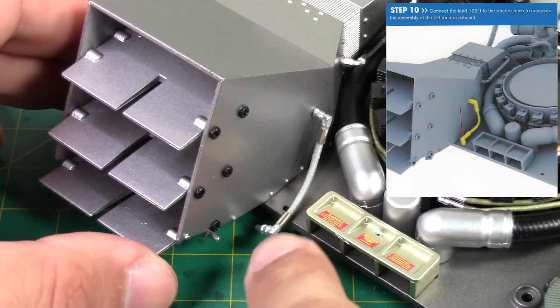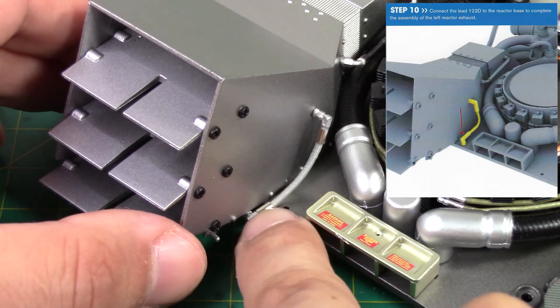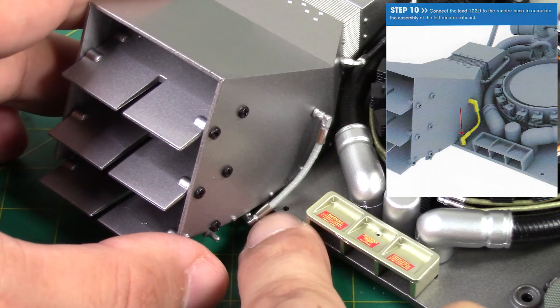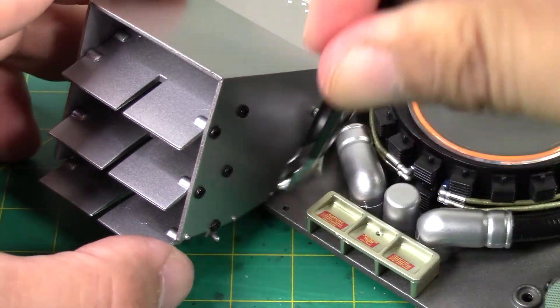And lastly we're going to connect the other end of our cable number 122D and that's going to go right into the last hole right there in the back plate. I think I'm going to use some tweezers for this side here. And just like that.